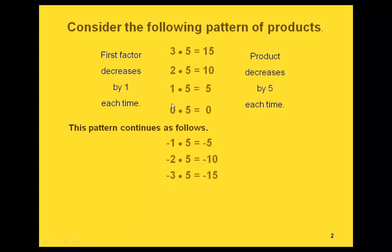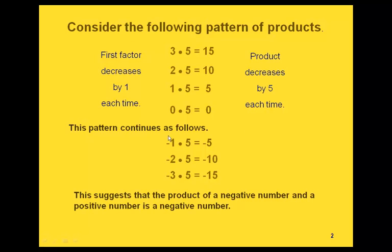Let's look at what happens if we continue the pattern. If we continue decreasing our factor by 1 each time, 0 decreased by 1 gives us negative 1, then negative 2 and negative 3. Our product continues to decrease by 5. So this pattern suggests that the product of a negative number and a positive number is a negative number, continuing the same pattern we had before.